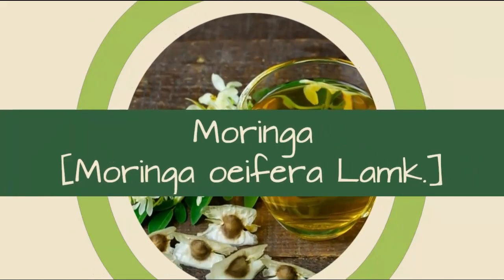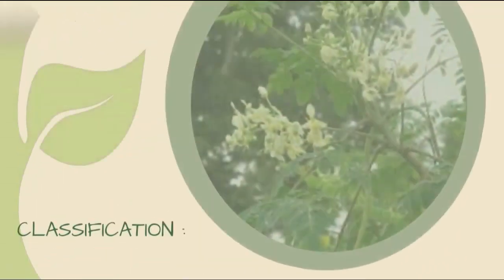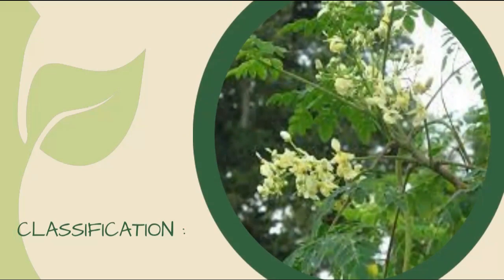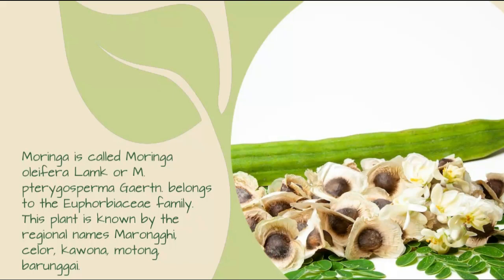Moringa oleifera. Classification: Moringa is called Moringa oleifera or M. pterygosperma. It belongs to the Euphorbiaceae family. This plant is known by the regional names Morongi, Salor, Cowona, Motong, and Barongai.